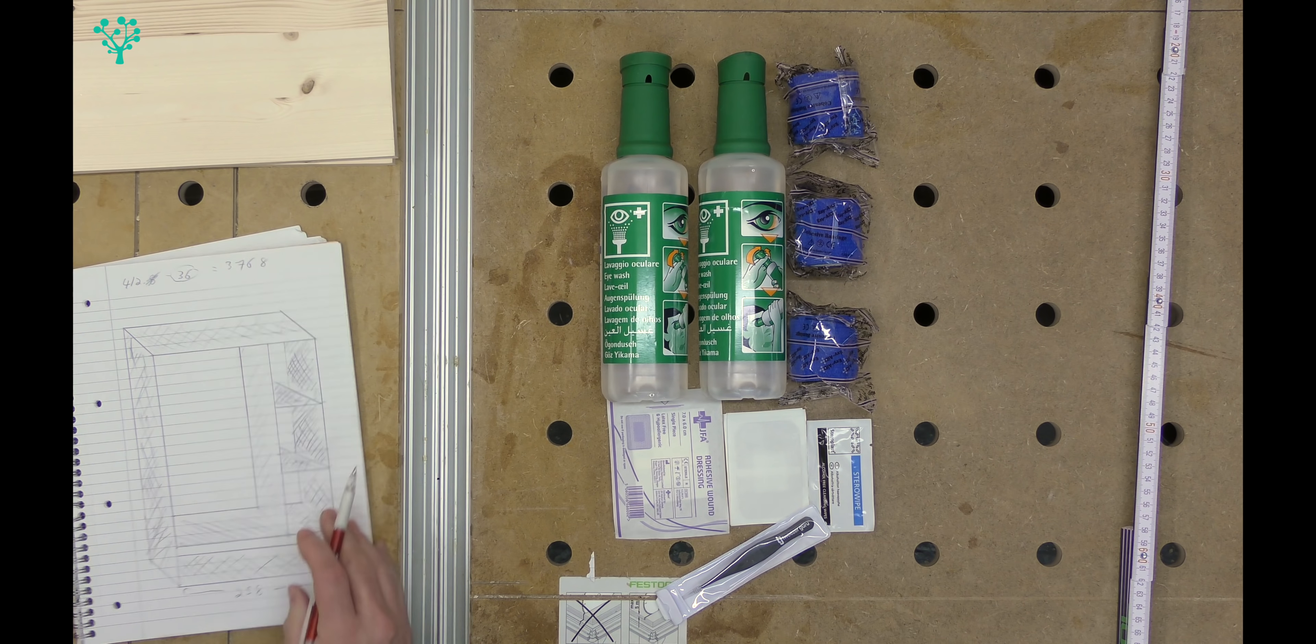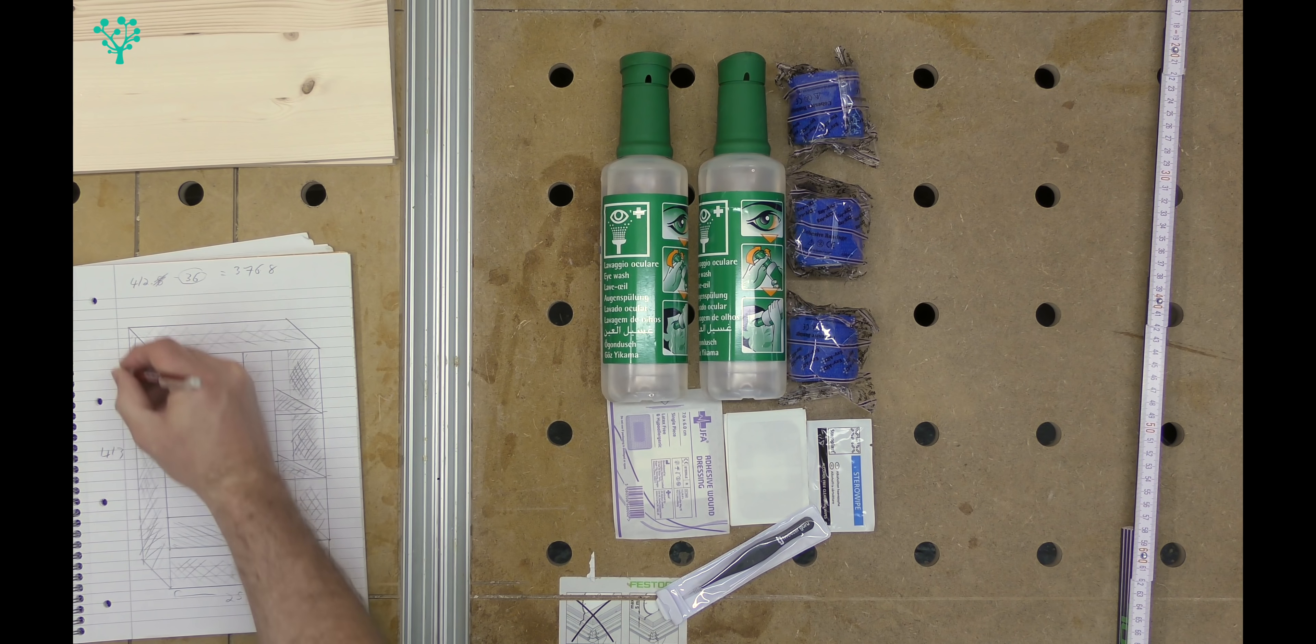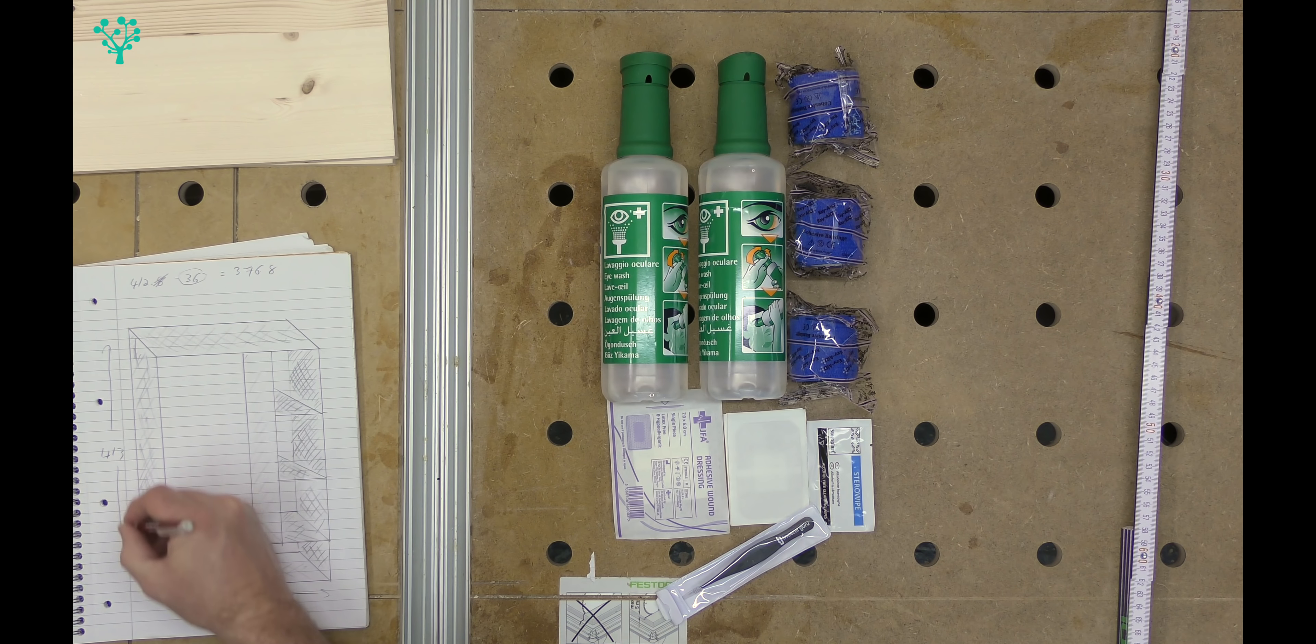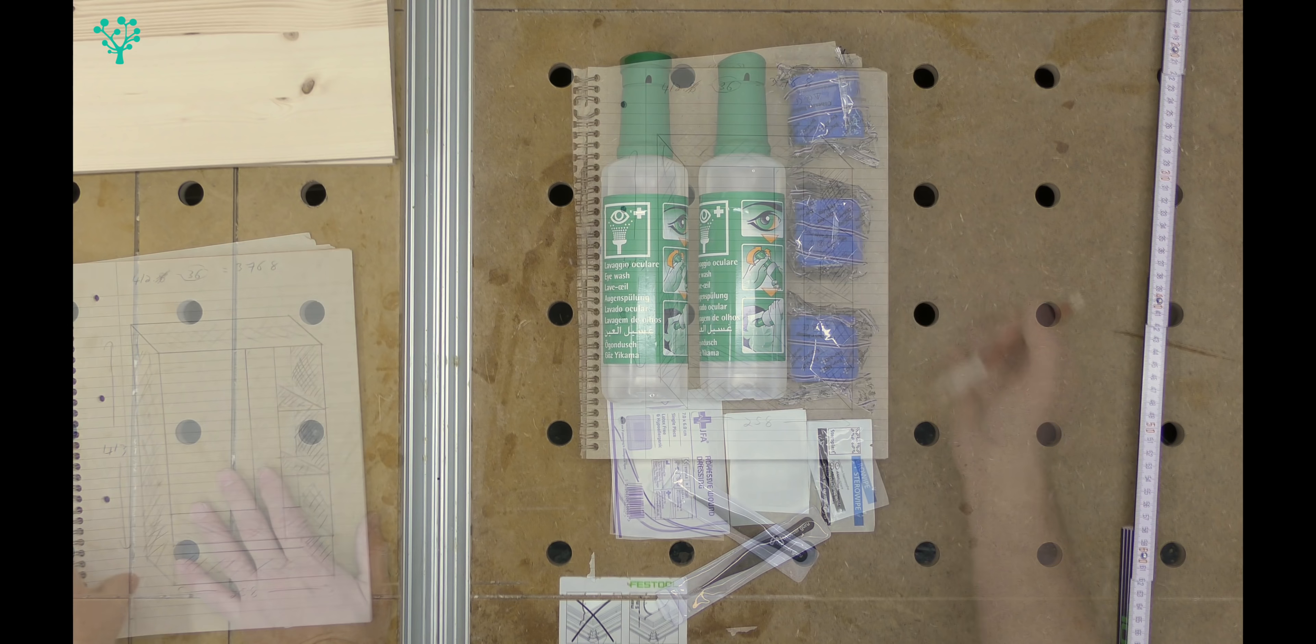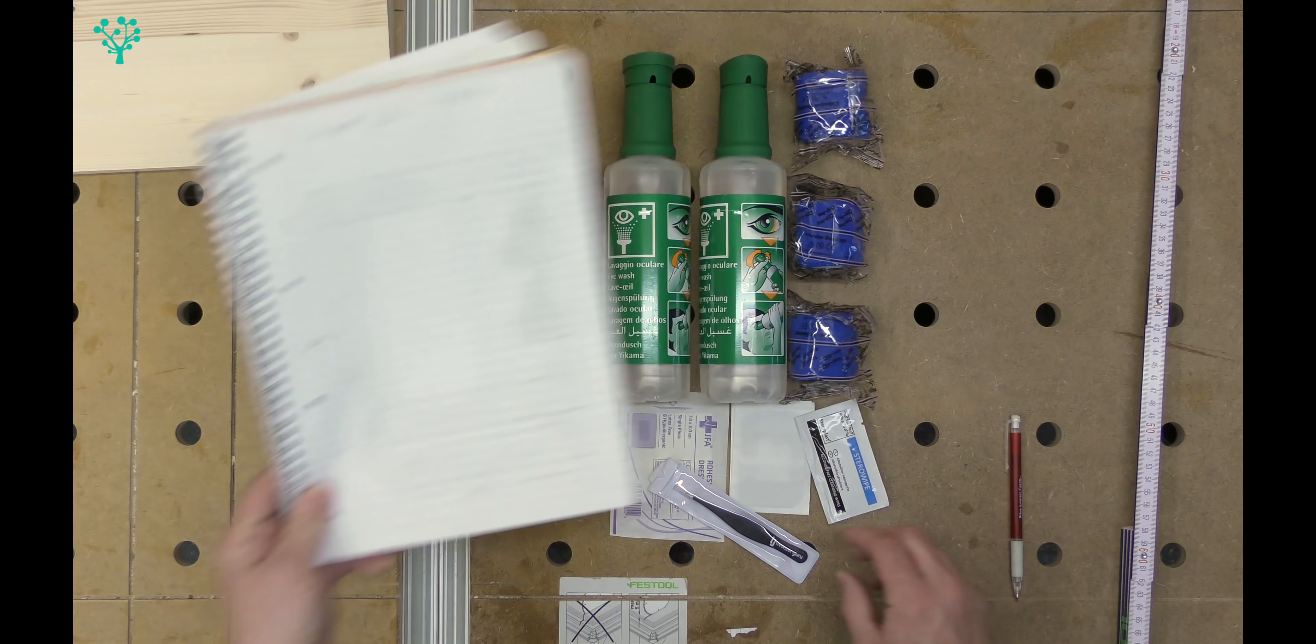Our eye is never going to notice that 0.8, so we'll round it up and we'll go for a height of 413mm. Now the one dimension we don't have is how deep this box needs to be.